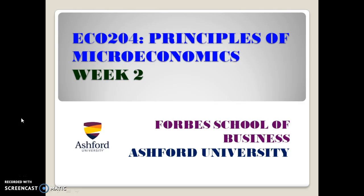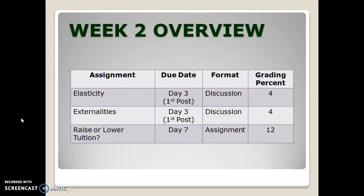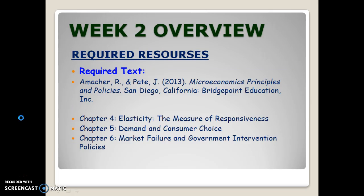Hi, everyone. Welcome to week two of ECO 204. For this week, you're going to be reading chapters four, five, and six. We're going to be looking at elasticity and consumer choice and different types of market failures.